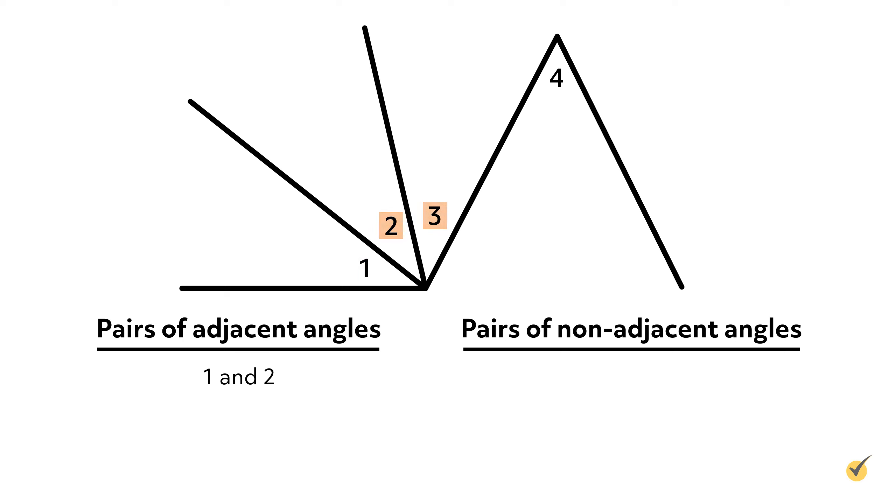The pair of angles 2 and 3 also share a common vertex and a common side, making them adjacent as well.